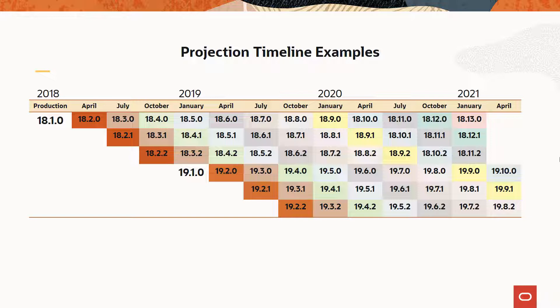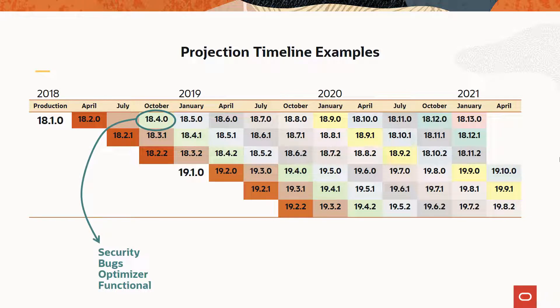RU patches usually contain the following types of fixes: security, regression (also called bugs), optimizer, and functional fixes, which may sometimes be feature extensions as well.